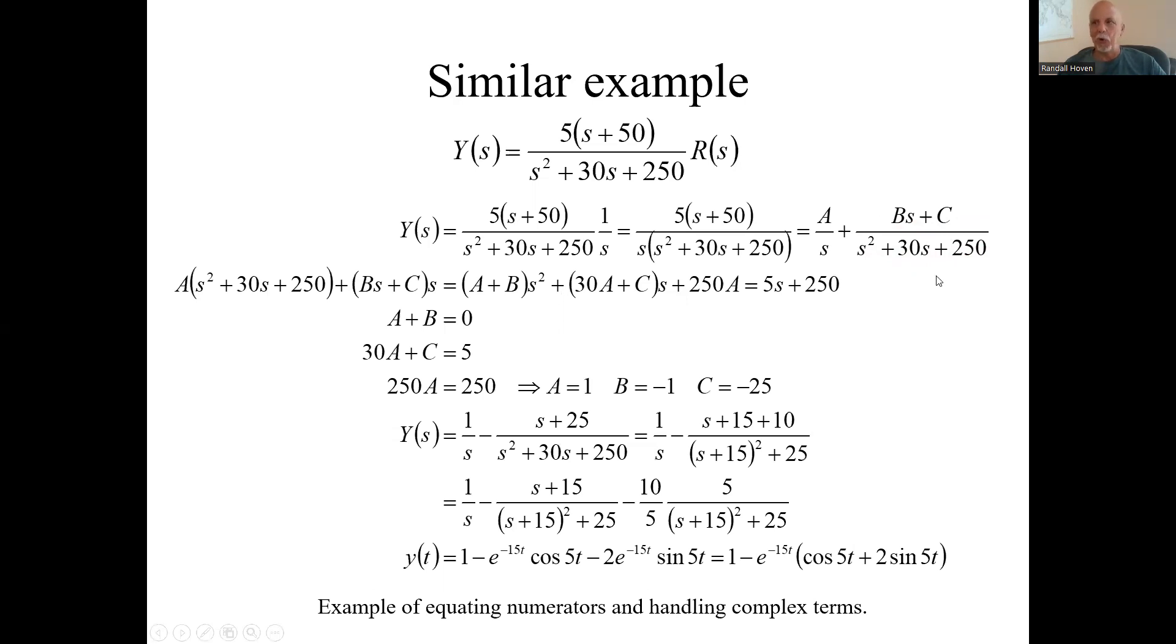You'll put all this over a common denominator. A times this denominator plus this times that. Multiply that out and group it in order of powers of s. And all that has to equal this numerator, 5s plus 250.